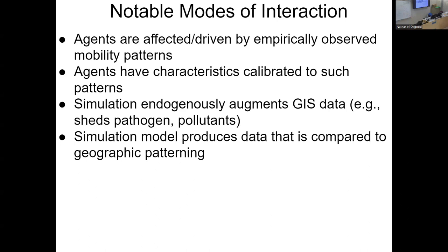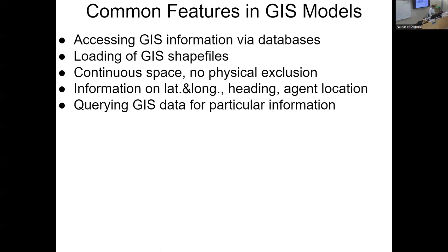There are times where the simulation augments the GIS data, and we use it to try to understand how much pathogen or pollutant we might expect to spread in different areas. Or we produce data in the model and compare it to or calibrate it to what's observed in the world. So what are some common tasks in agent-based models informed by GIS?